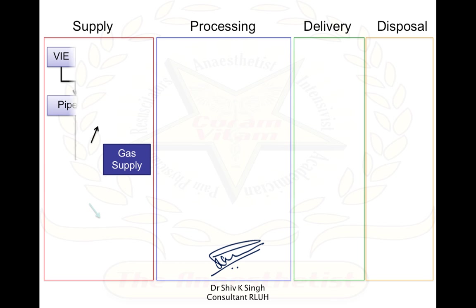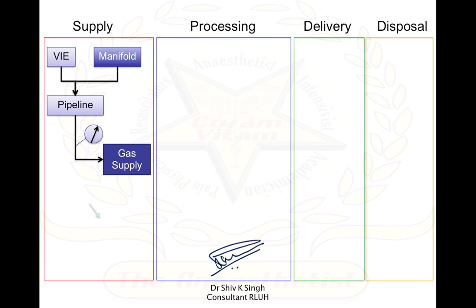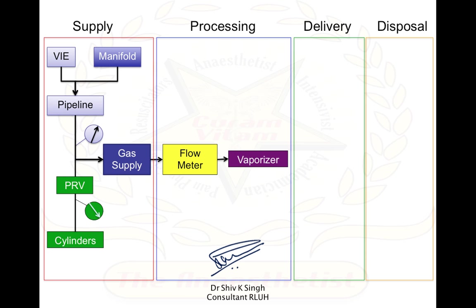If you look at the gas supply sources, we have the vacuum insulated evaporators supplying oxygen through the pipelines. You can also get oxygen to the pipeline through a manifold, which is actually a bank of cylinders. And then we have cylinders which can be connected directly to the machine, and because the cylinders are at a high pressure you need a pressure reducing valve to supply the gases to the machine.